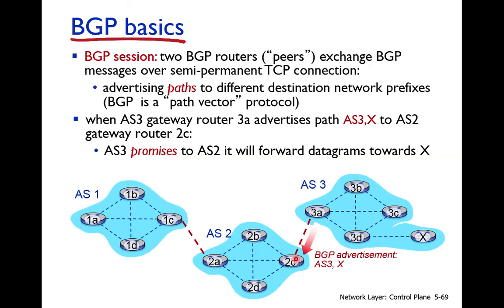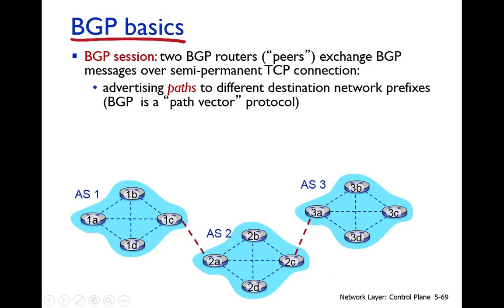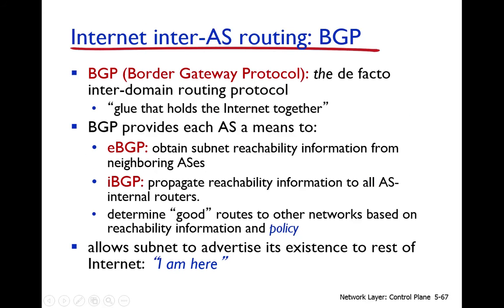When 2C receives the information that it can reach autonomous system 3 and then network X through autonomous system 3, this information is then advertised to all routers in its domain using the iBGP protocol. So eBGP is used to obtain subnet reachability information from neighboring autonomous systems, and iBGP is used to propagate that reachability information to all internal routers within the autonomous system.